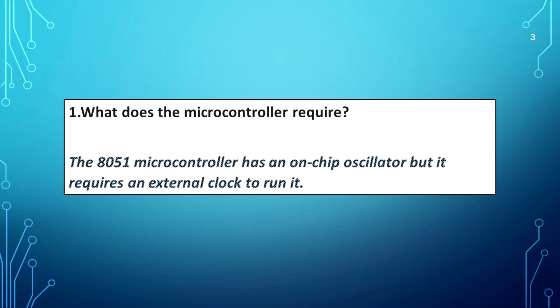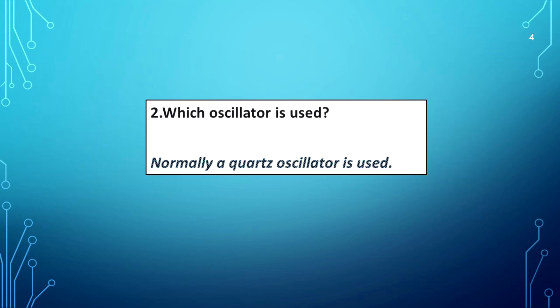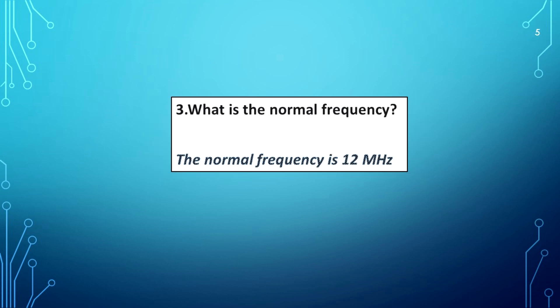What does the microcontroller require? The 8051 microcontroller has an on-chip oscillator but it requires an external clock to run it. Which oscillator is used? Normally a quartz oscillator is used. What is the normal frequency? The normal frequency is 12 MHz.